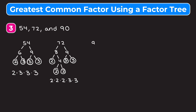Finally, let's make a factor tree for 90. I'm going to break it up into nine times ten. Neither of those are prime, so let's break nine into three times three — both prime — and break ten into two times five — both prime. So the prime factorization of 90 is two times three times three times five.